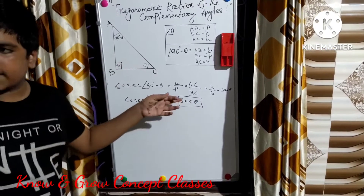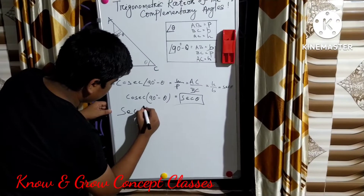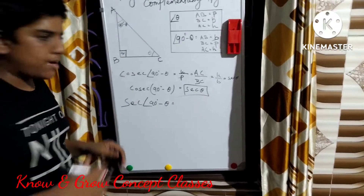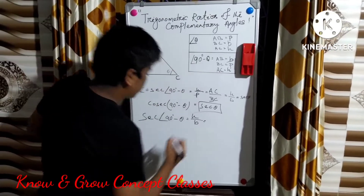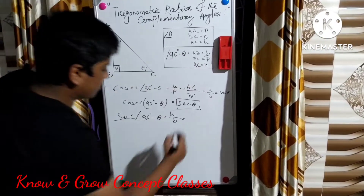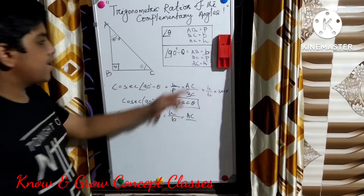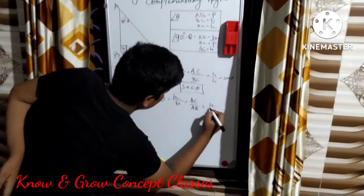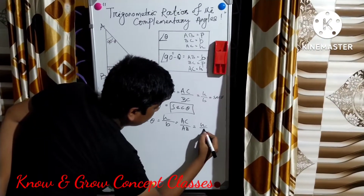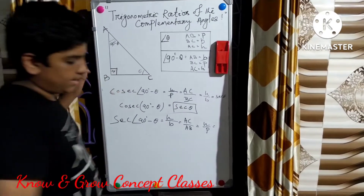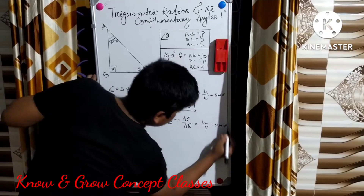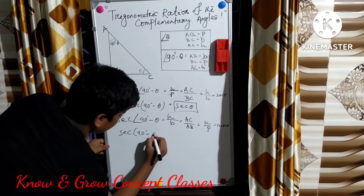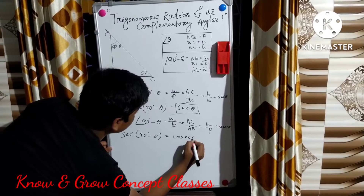Now let us find the ratio of sec(90° - θ). Sec(90° - θ) is equal to hypotenuse by base. For 90° - θ, the hypotenuse is AC and the base is AB. For angle theta, AC is the hypotenuse and AB is the perpendicular, which is the ratio of cosec θ. So sec(90° - θ) = cosec θ.